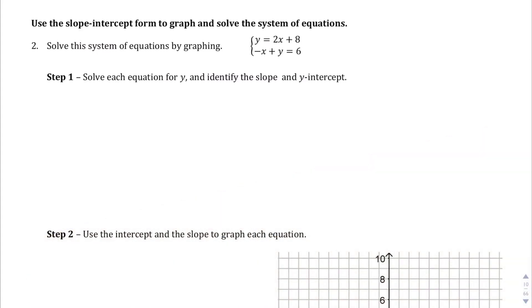We're on page 10 of this Algebra 1A credit and jumping into question number two. We're using the slope-intercept form to graph and solve the system of equations. The slope-intercept form is nice because when you have things written in this format, it tells you exactly what the slope is — m is the slope and b is the y-intercept — and that makes graphing much easier.